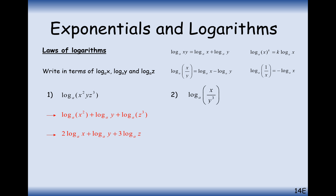For log base A of x divided by y cubed, we've got a division so we need to subtract when writing as separate logs. Bringing the 3 to the front as a power, it becomes log base A of x minus 3 log base A of y.